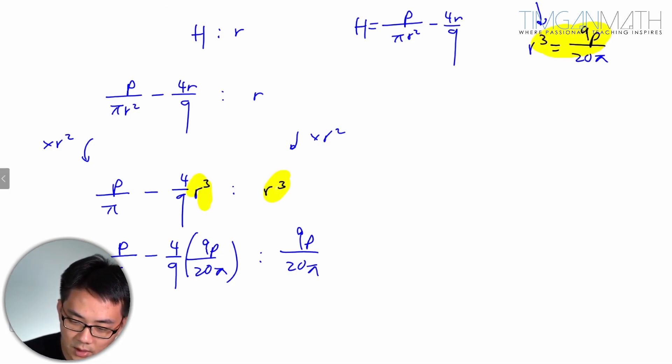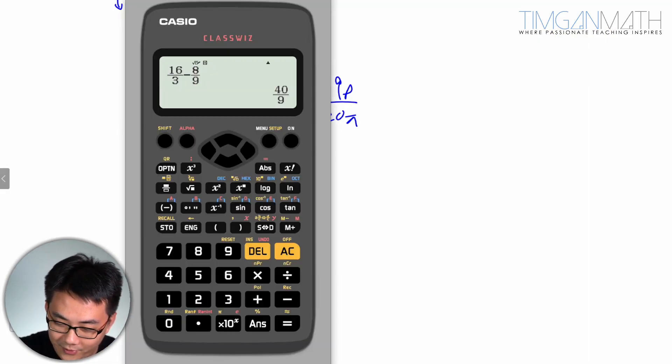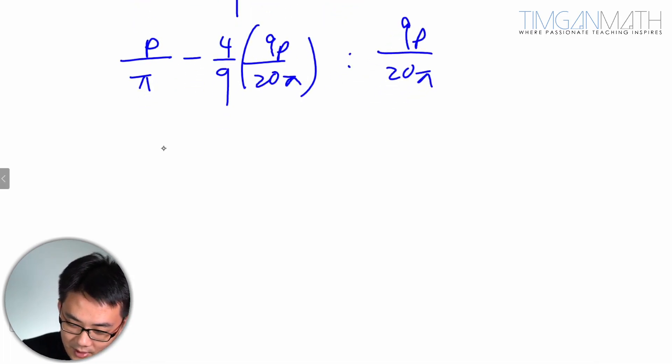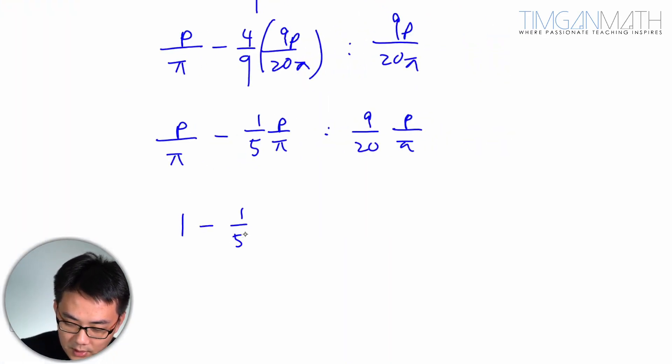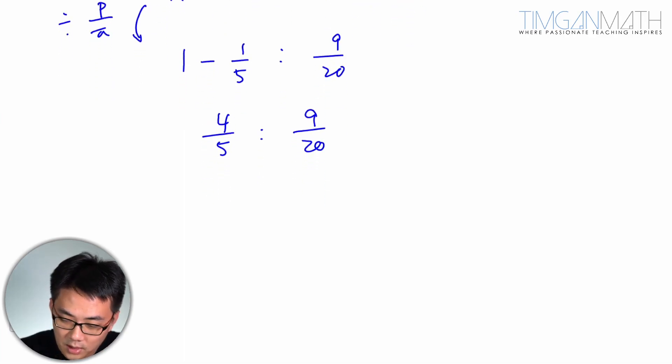Sub it in. Then once you sub it in, life is good. You get this as 1, 4 over 9 times 9 over 20, seems like 1 over 5. So it's 4 over 5 P pi. 1 over 5 P over pi. 9 over 20 P over pi. So this case here, these are all in P over pi, so you can just divide by P over pi. Cancel the P over pi. This is 9 over 20. So this will be 4 over 5 to 9 over 20. So to rearrange this one, it's all pretty okay. Just take 4 over 5 divided by 9 over 20 and we'll get 16 to 9.